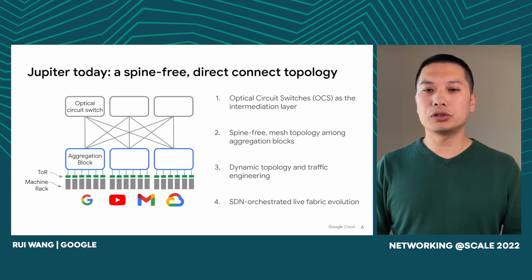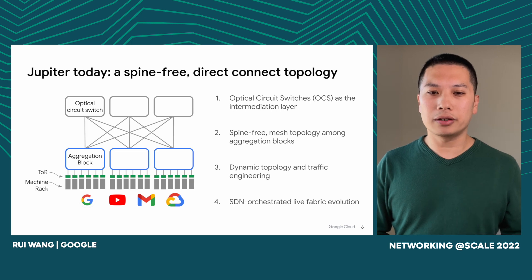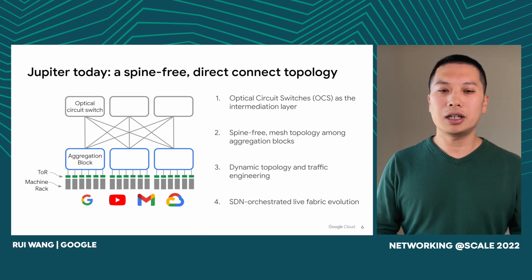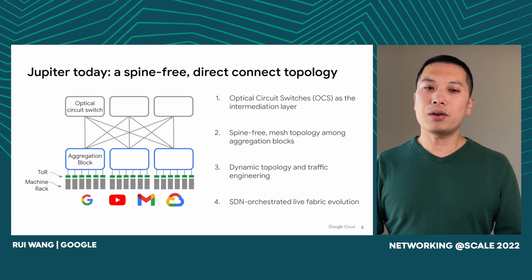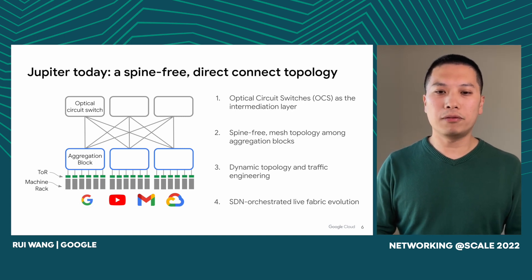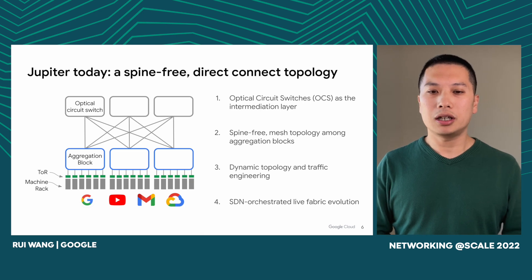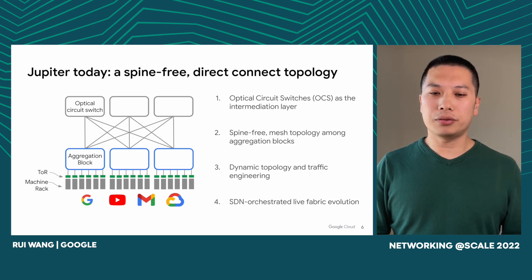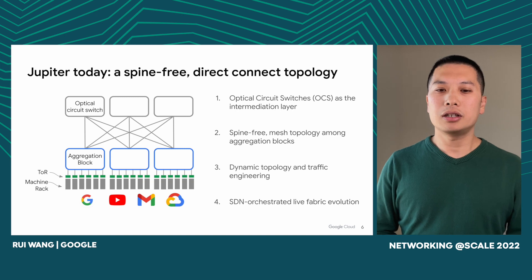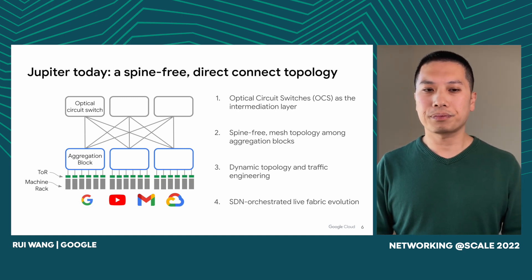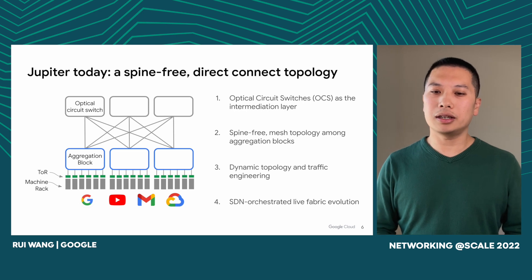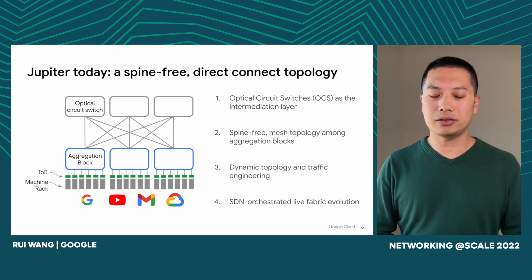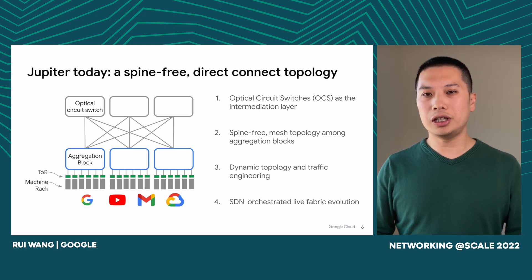First, we introduced optical circuit switches as the intermediation layer for building-scale networks — seamlessly supporting heterogeneous technologies, upgrades, and service requirements. Second, direct mesh-based network topologies for higher performance, lower latency, lower cost, and lower power consumption. Third, real-time topology and traffic engineering to simultaneously adapt network connectivity and pathing to match application communication patterns. Fourth, SDN-orchestrated hitless network upgrades with localized add or remove of capacity while incurring no service downtime. In the rest of the talk, we will go through these points one by one.